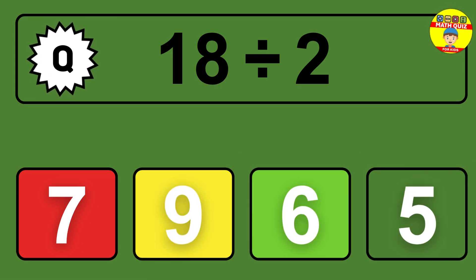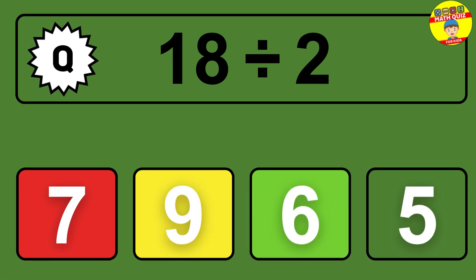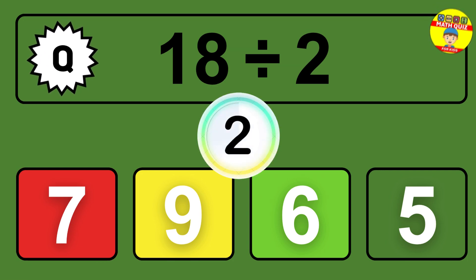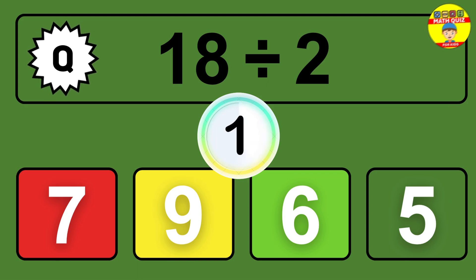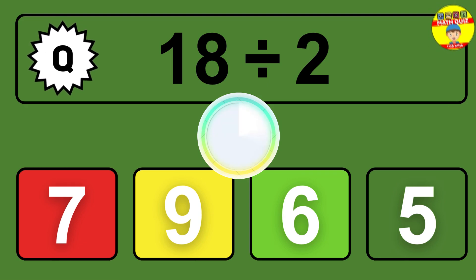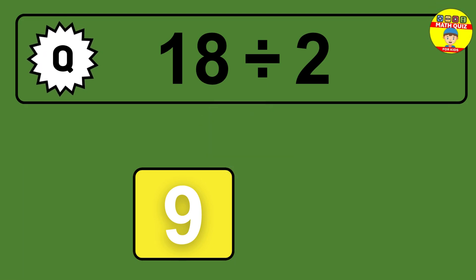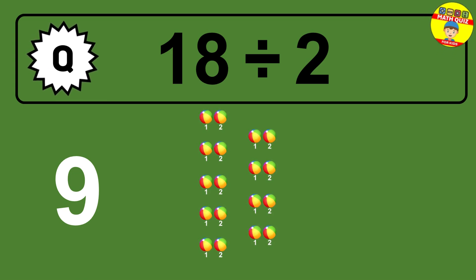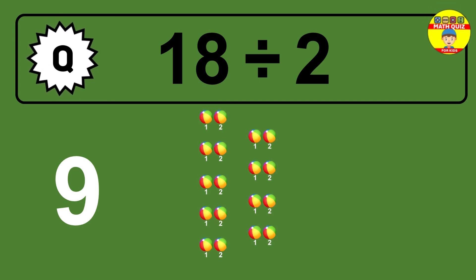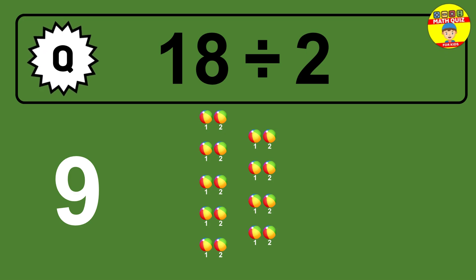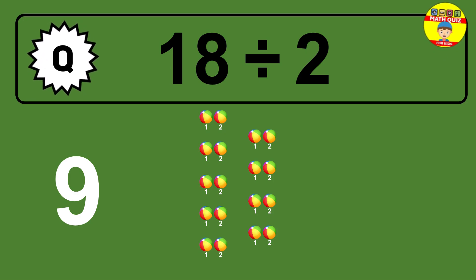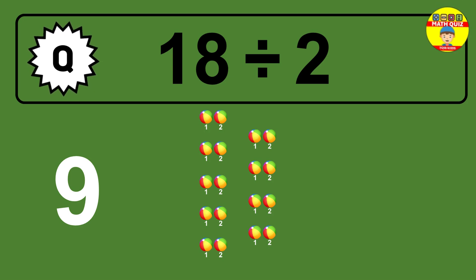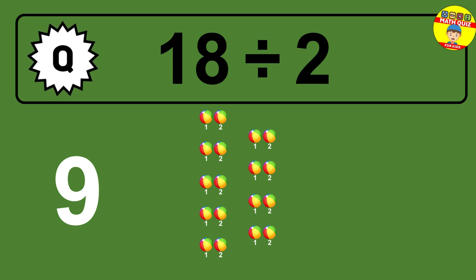18 divided by 2 — time to think. Let's go to the solution. Divide the number 18 by 2. Each group contains 2 units, so dividing 18 by 2 results in 9 equal groups. Thus, the result is 18 divided by 2 equals 9.